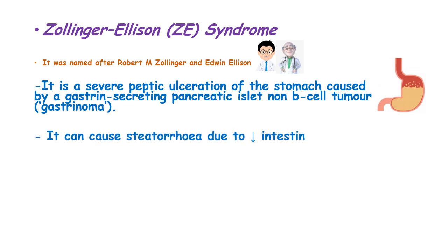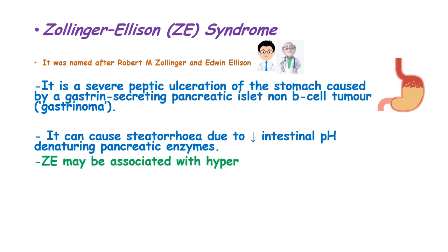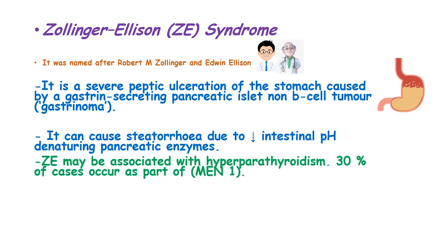This tumor can cause steatorrhea due to reduced intestinal pH and denaturing of pancreatic enzymes. Zollinger-Ellison syndrome may be associated with hyperparathyroidism, and 30% of cases occur in multiple endocrine neoplasia type 1 syndrome.